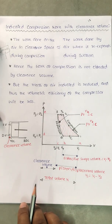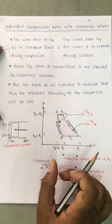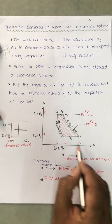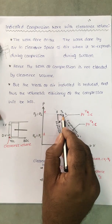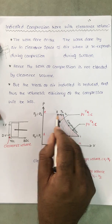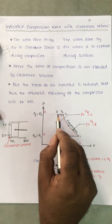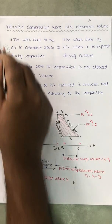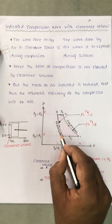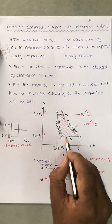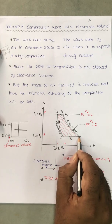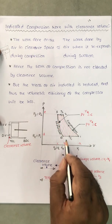Let us represent the working of a compressor with clearance volume on a PV plot. On the PV diagram: 1 to 2 is the compression, 2 to 3 is the delivery. After delivery, some amount of air remains in the clearance volume and will expand — this expansion follows up to point 4. After point 4 the pressure is P1, so suction begins. The cycle is: suction, compression, delivery, expansion, and suction again.